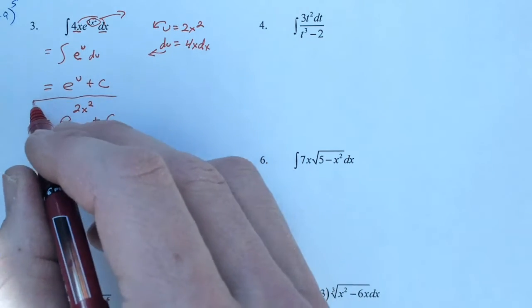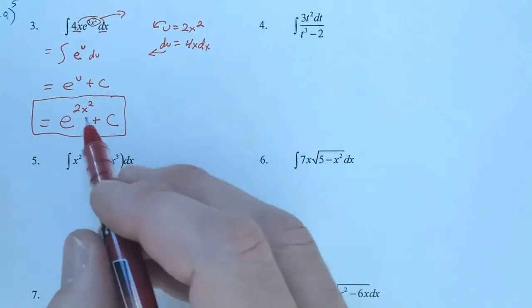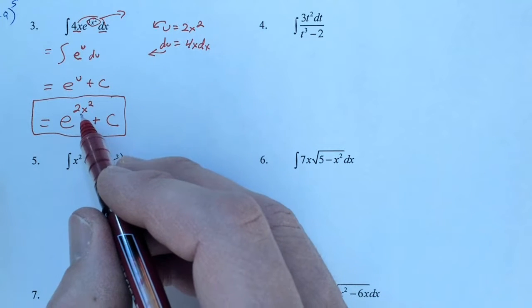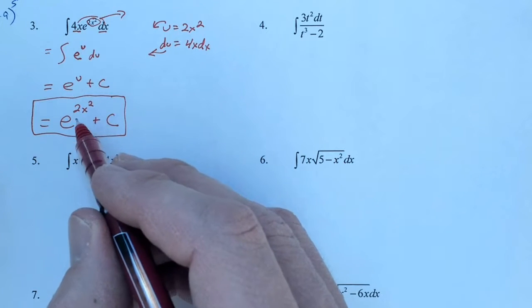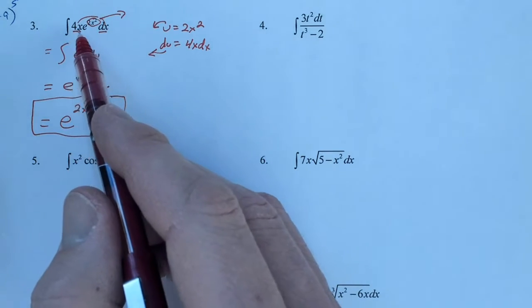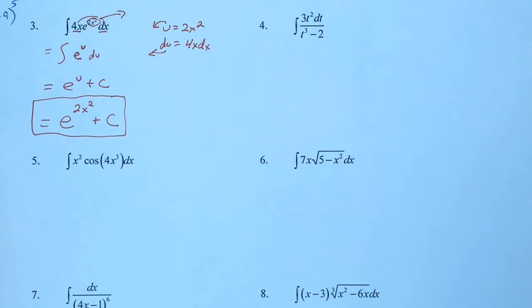And again, a nice quick derivative, right? This is e to the inner function. So we would do chain rule. e to anything derives to itself. So we will have e to the 2x squared. And then we will multiply it by the derivative of 2x squared, which is 4x. Notice what we have up here. 4x times e to the 2x squared. So this is definitely our antiderivative.